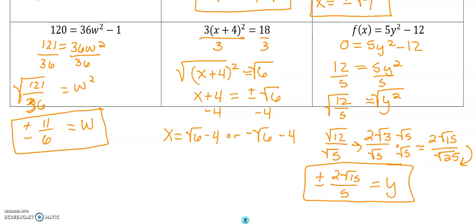The square root of 121 is 11. The square root of 36 is 6. And again, I've got that plus minus sign out in front.